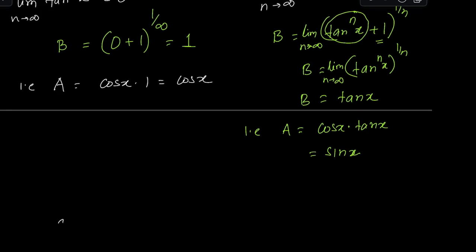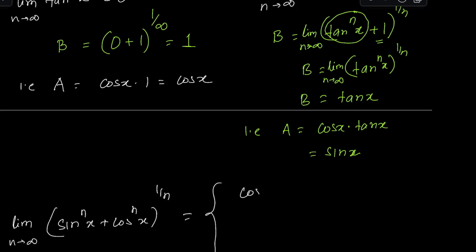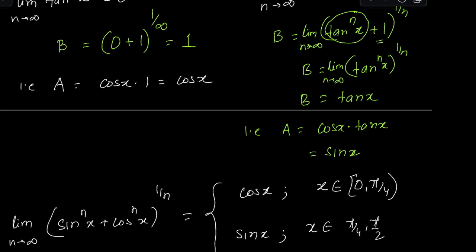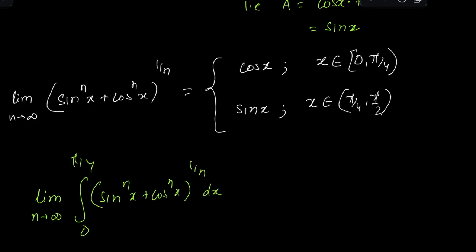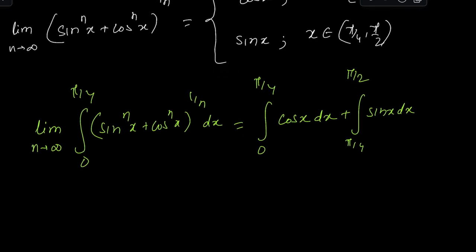So I've redefined this function in two ways depending on the interval: A = cos(x) when x ∈ (0, π/4), and A = sin(x) when x ∈ (π/4, π/2). This makes the integration super easy. The original integral splits into: the integral of cos(x) from 0 to π/4, plus the integral of sin(x) from π/4 to π/2.